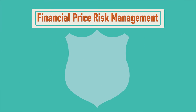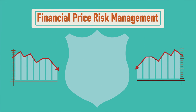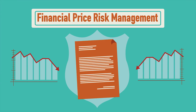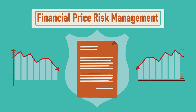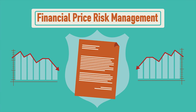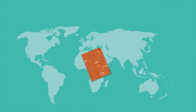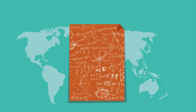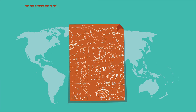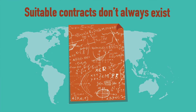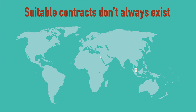Financial price risk management uses financial derivative contracts to protect against negative price moves. These contracts can be complicated, and suitable contracts don't always exist for all commodities in all locations.